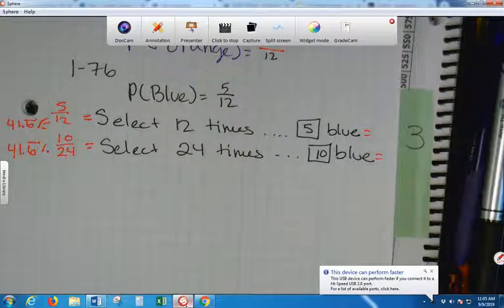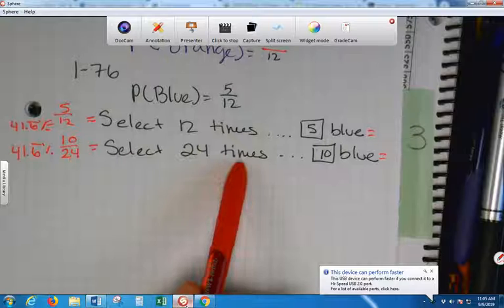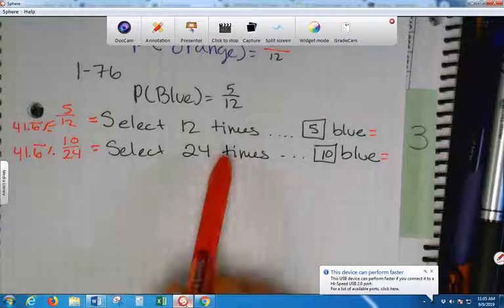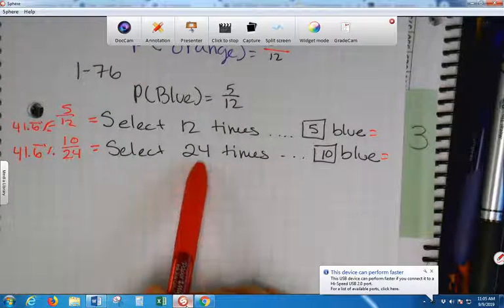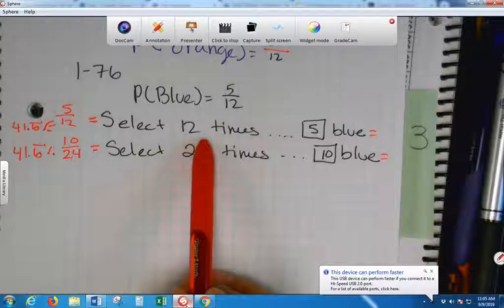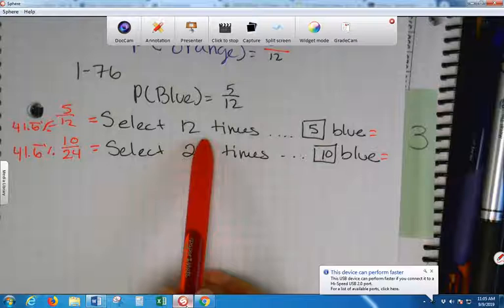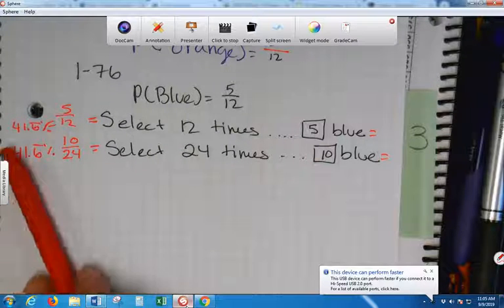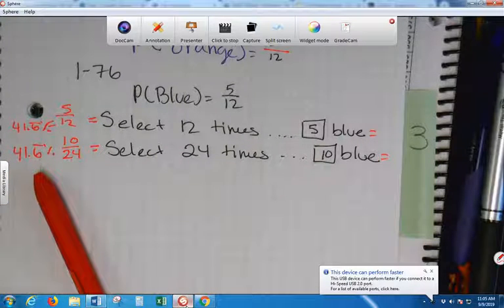Guess what? This twenty-four means the gumball machine is full. This twelve means that the gumball machine is half empty. Wait. So, there's twenty-four gumballs inside? But, what happens to my percent? They don't change.